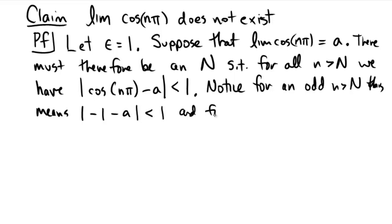And for an even n bigger than capital N, we would have that the cosine of an even number times pi would be a positive 1, so we'd have a 1 minus a, which would be less than 1.